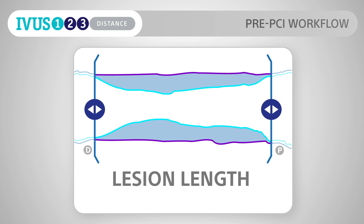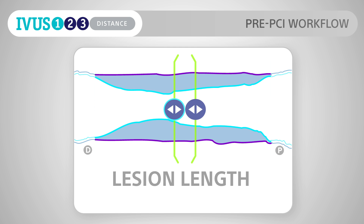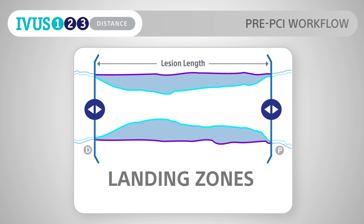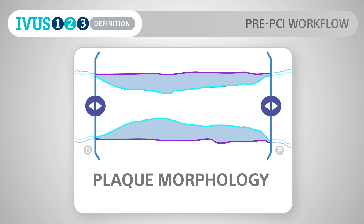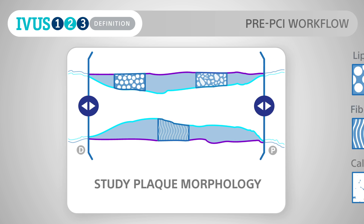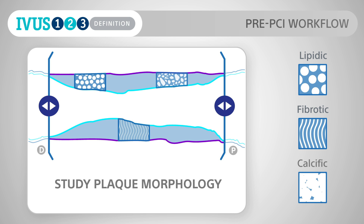Lesion length: define the appropriate landing zones and determine the lesion length. Plaque morphology: study plaque morphology — lipidic, fibrotic, or calcific — to select the right modification strategy.